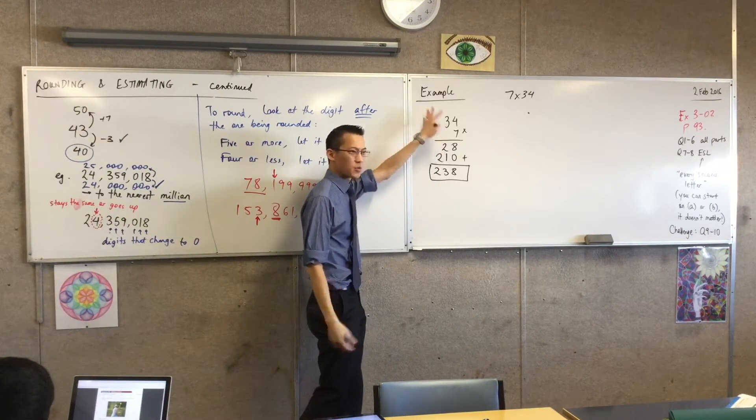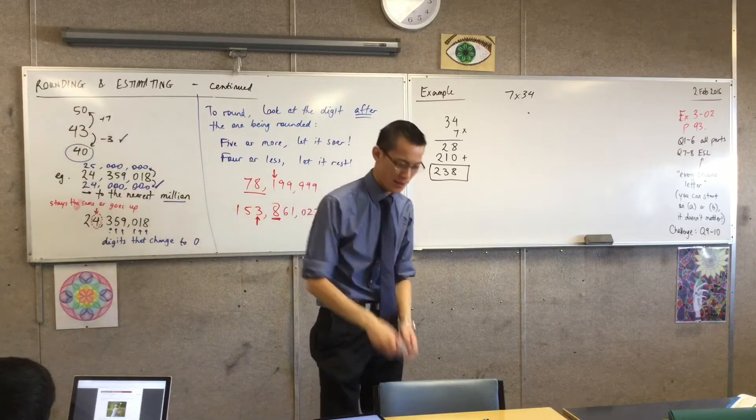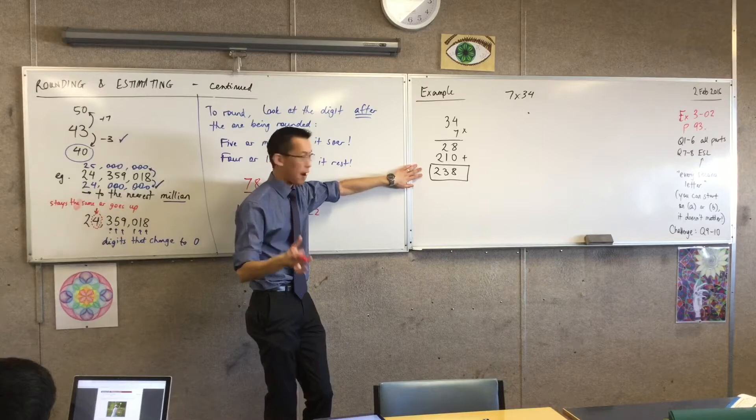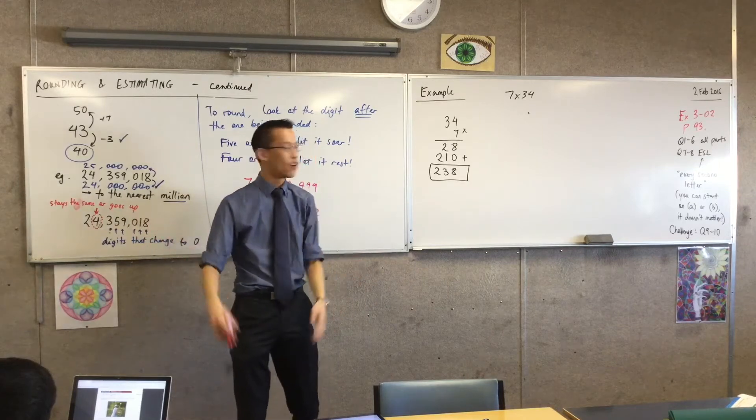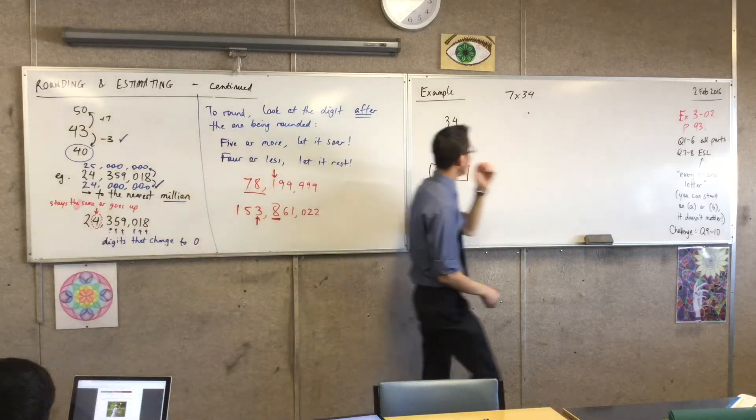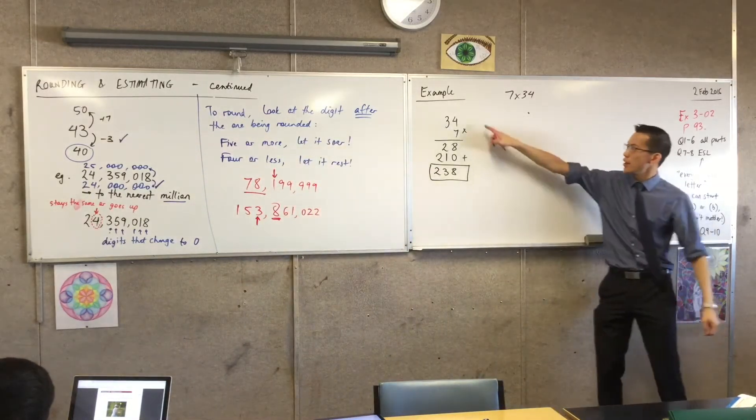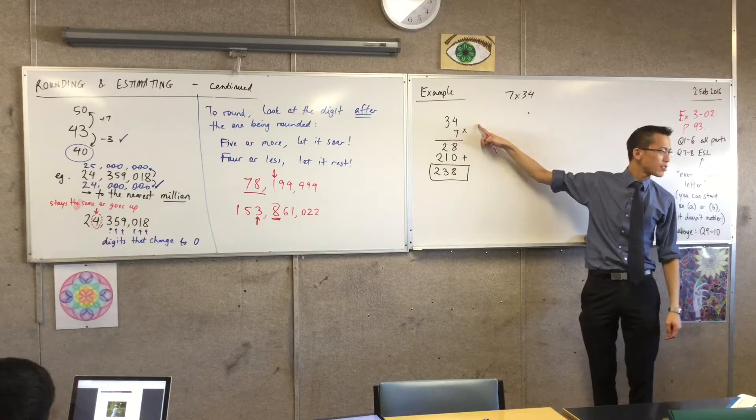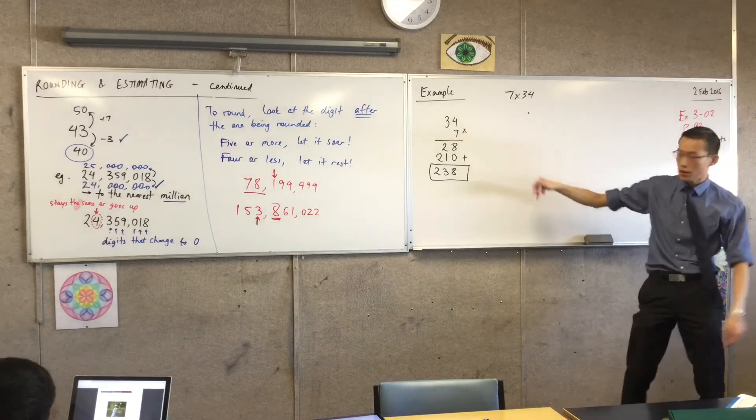34 times 7 is one of those messy numbers. So what I'm going to do is just to check that I know I'm in the right ballpark and I haven't done something crazy and wrong, I'm going to round both of these numbers and see what happens. So when I round these, 34, I'll round that to the nearest 10. What's the nearest 10 to 34? 30. Very good, so 30 is the closest one.